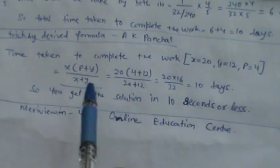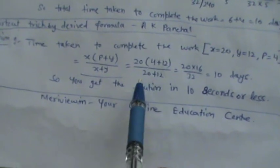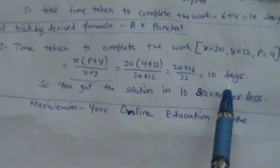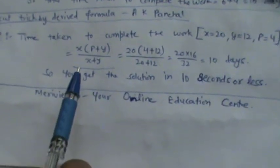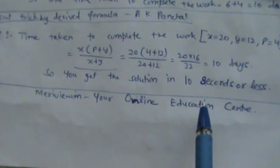So putting the values of x, y and P into this formula we get 20 into 4 plus 12 over 20 plus 12. So we find out it's 10 days. So putting just the terms in the formula we get the answer in just 10 seconds or less.